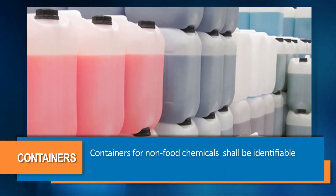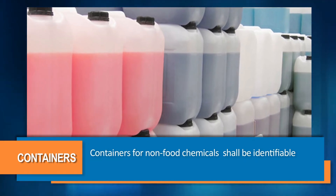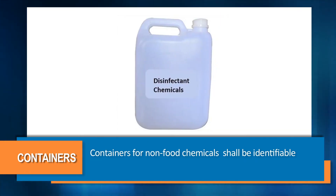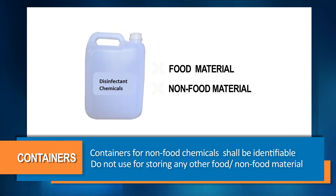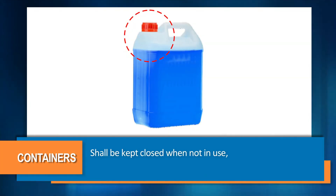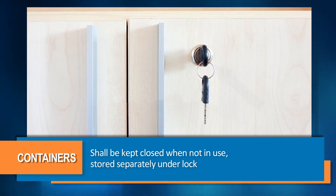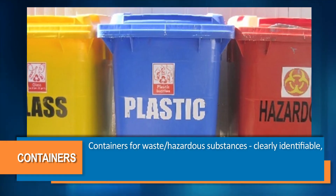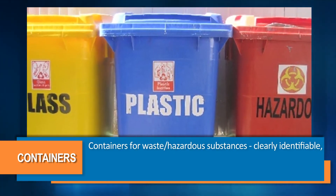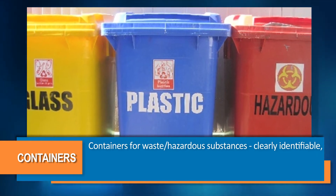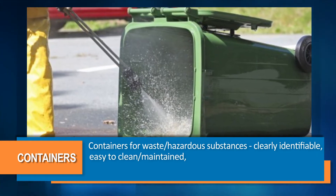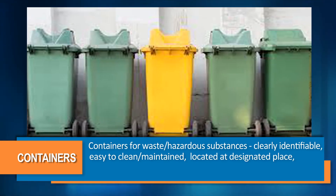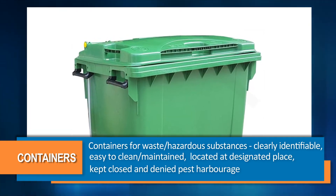Containers for storing non-food chemicals such as cleaning and maintenance chemicals shall be specifically identifiable. They should not be used for storing any other food or non-food material. They shall be kept closed when not in use and stored separately under lock to prevent malicious or accidental contamination of food. Containers for holding waste and hazardous substances shall be clearly identifiable, easy to clean, maintained in good condition, located at a designated place, kept closed and deny pest harborage.